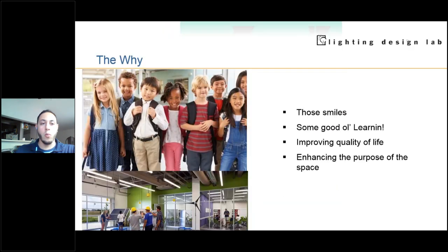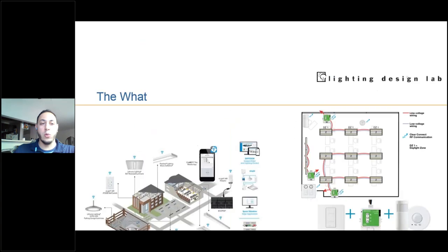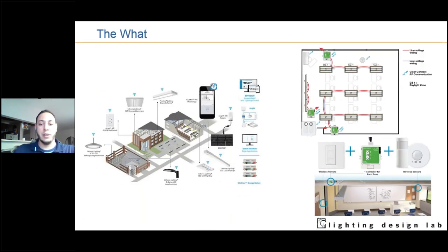Why are we here? We're here for the smiles, for the kids. We're here to implement network lighting control technologies in schools — for the people, not necessarily worrying as much about the space and the savings, because if you design well for people, the savings will come. We're going to understand how to leverage utility incentives, how to design spaces to be flexible and purposeful, reducing glare and operating hours, and ultimately reducing the energy bill.